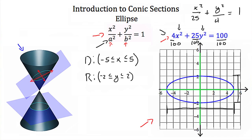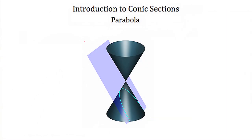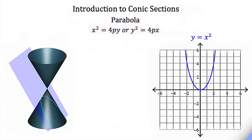Now let's look at our next conic section — the parabola. The parabola is created when our plane that cuts through our cone is parallel to the edge of the cone. When that happens, the shape we have is that of a parabola. If I was looking at my plane cutting through my cone and I see the shape of a parabola, I can draw a coordinate axis on that shape. Then if I took this parabola and this coordinate axis and drew them on a graph, it would look something like this.